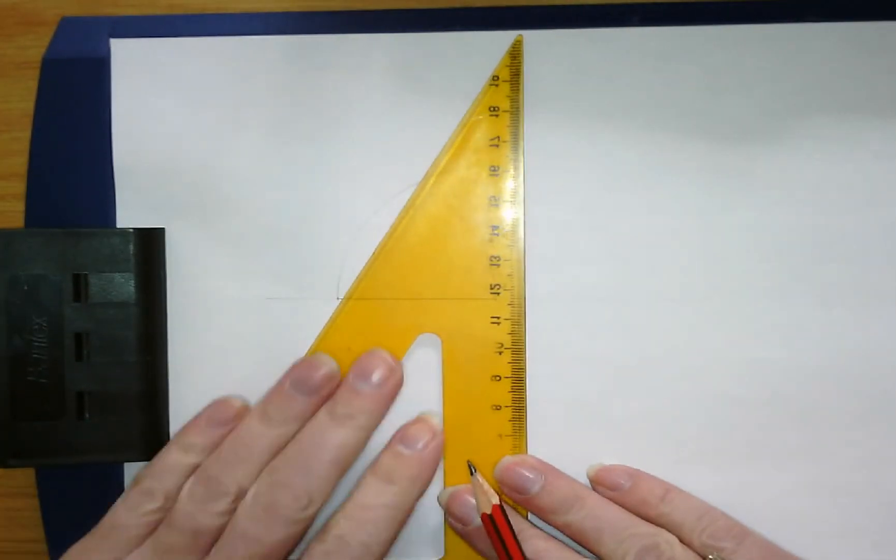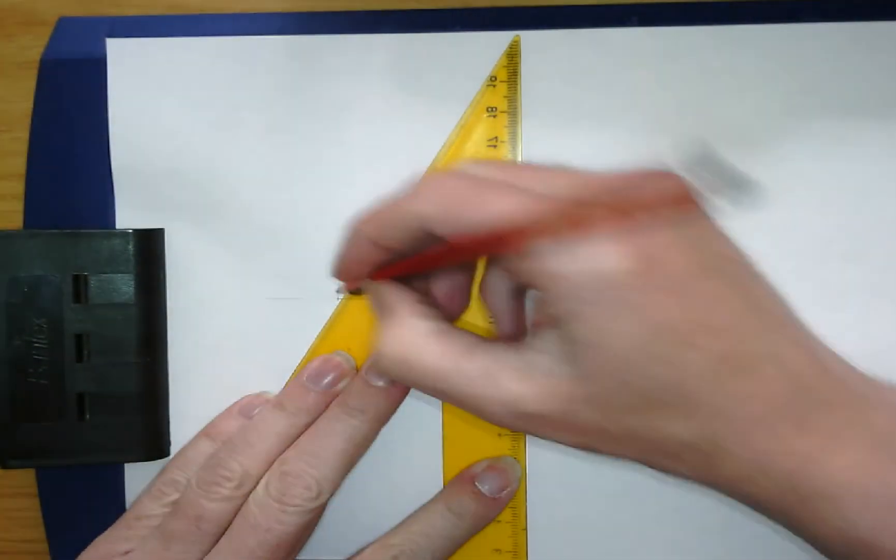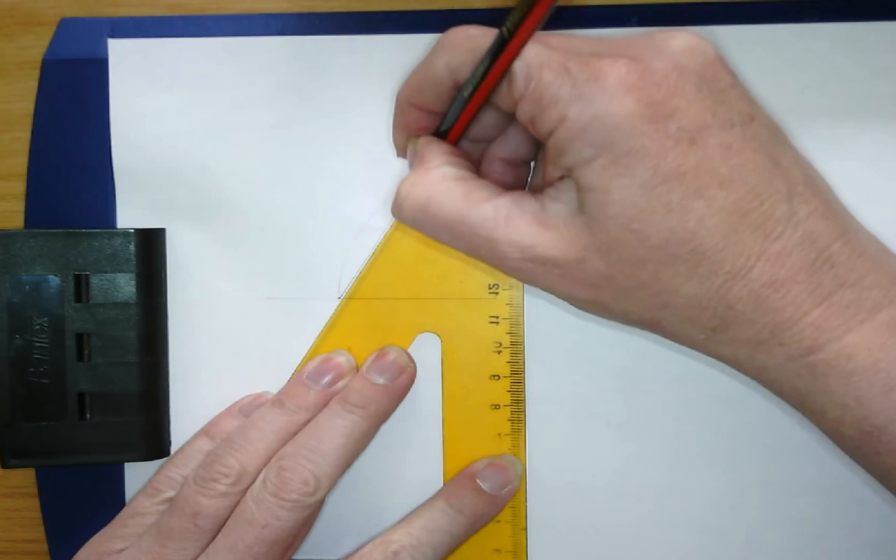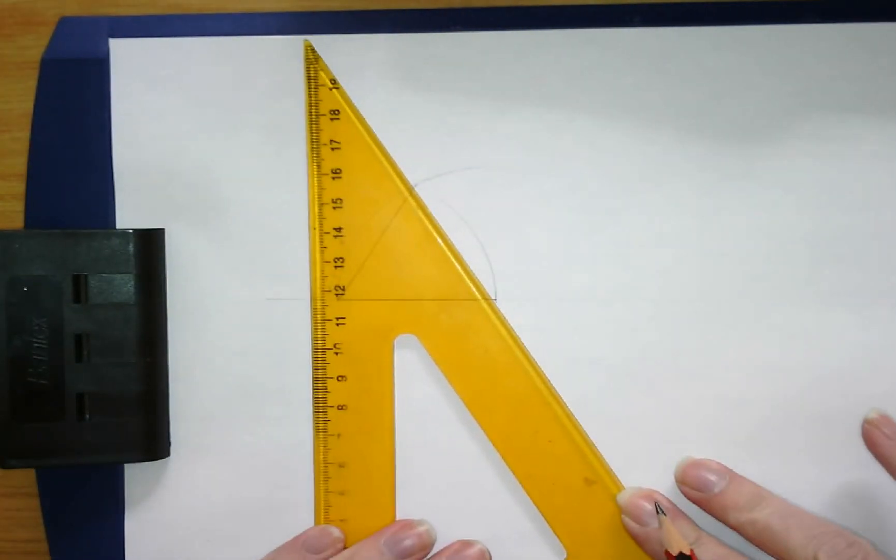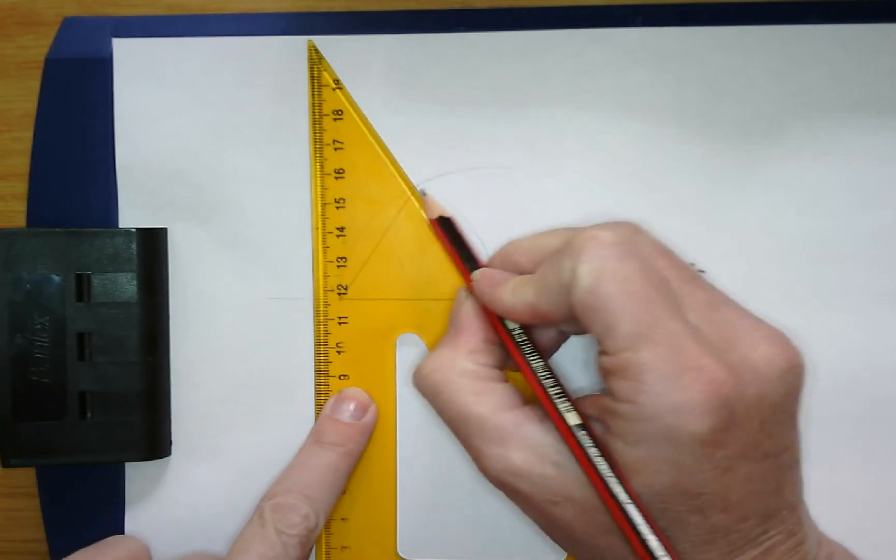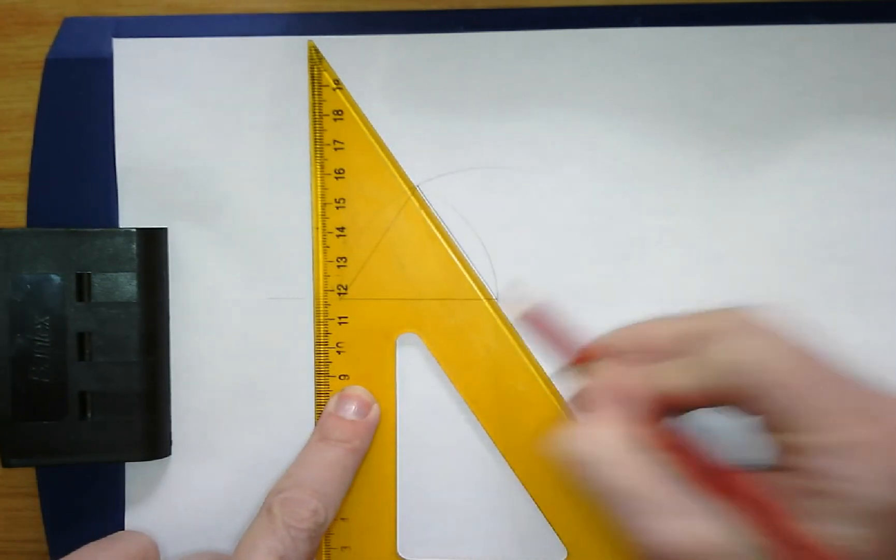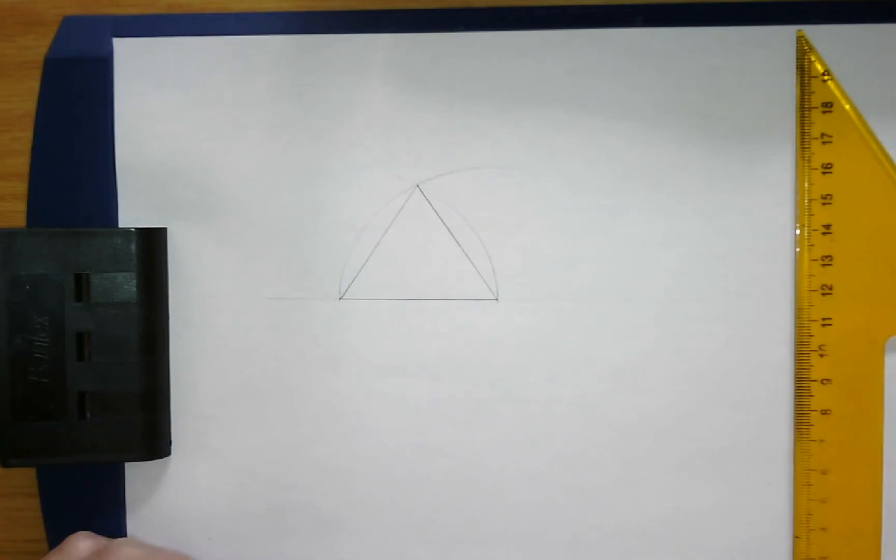An equilateral triangle will have an angle of 60 degrees. We are going to pull out our pencil to make sure that our ruler remains in place the entire time, and then you have your triangle.